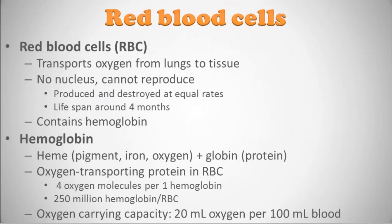Red blood cells are really the largest formed element making up your hematocrit. Their purpose is to pick up oxygen at the lungs and transport it to the tissue. There's no nucleus in a red blood cell so it can't reproduce — red blood cells are produced and destroyed at about equal rates with a lifespan of only around four months. They're created in bone marrow through the hormone EPO, or erythropoietin, which comes from around the kidneys. Red blood cells importantly contain hemoglobin.